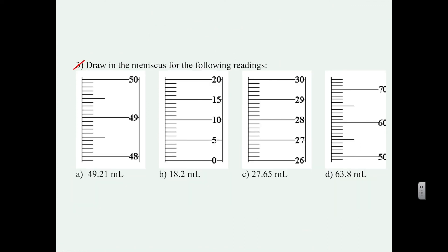Now could you draw the meniscus for each of the following here? Here you have 49.21 milliliters. Well, the bottom of the meniscus should be at 49.2, and the bottom of the meniscus should be at 49.21. So I'm just estimating and getting an approximate estimate.